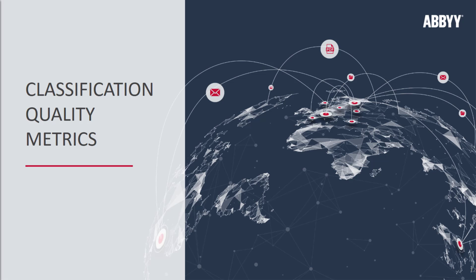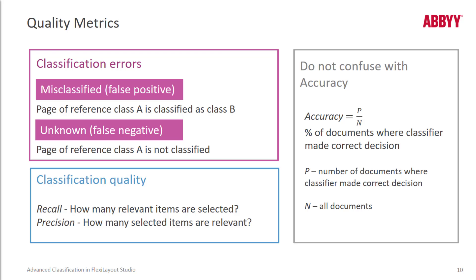Let's talk about classification quality metrics. After classifying documents, we can evaluate classification quality. Our main quality metrics are recall, precision, and false positive/false negative results.